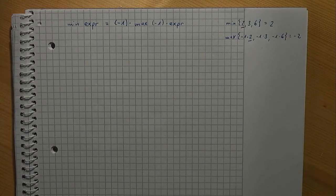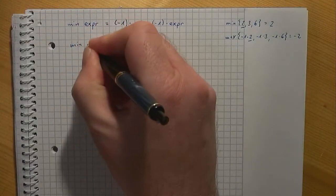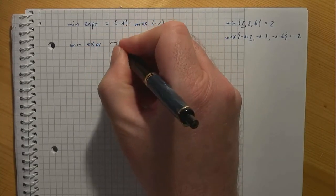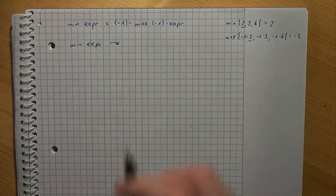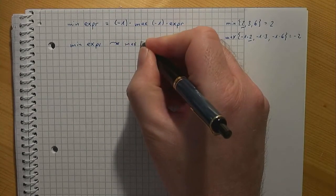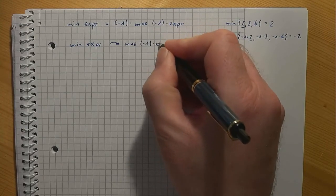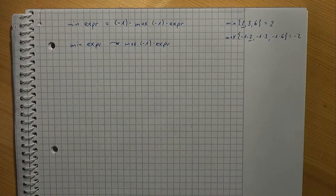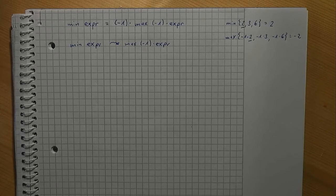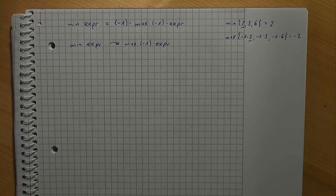And this is true in general. If we replace 'minimize some expression' with 'maximize minus one times the expression' and solve the maximization problem, then any solution that turns out to be optimal for the maximization problem is optimal for the minimization problem too. All we have to keep in mind is that the optimum objective function value of the maximization problem is minus one times the optimum objective function value of the minimization problem.